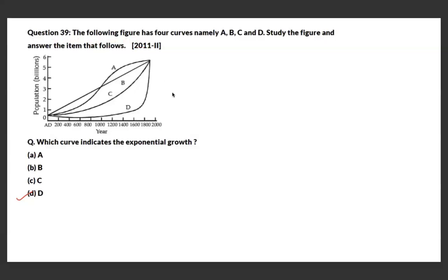A figure shows four curves A, B, C, and D plotting population over years. The question asks which curve indicates exponential growth. Exponential growth means a sudden, sharp spike in a short time period. Curve D, though growing slowly up to around 1800, then shows a very sharp and rapid rise — the steepest increase among all four — representing exponential growth.